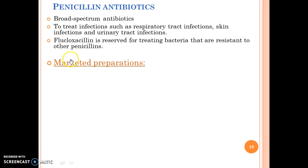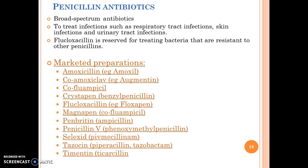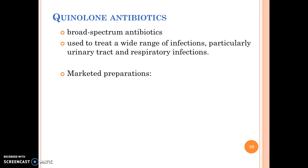Penicillin antibiotics are broad-spectrum antibiotics used to treat respiratory tract infections, skin infections, and urinary tract infections. Flucloxacillin is reserved for treating bacteria that are resistant to other penicillins. These are the marketed preparations.